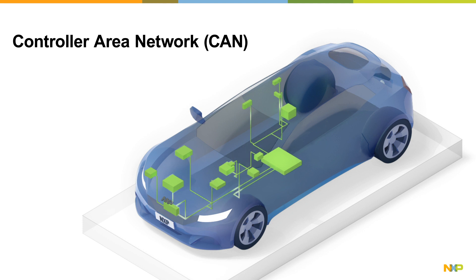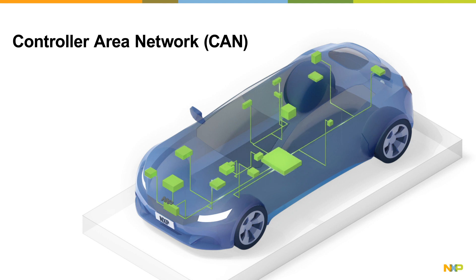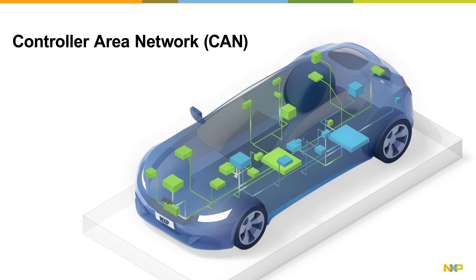For many years, CAN has been the primary communications standard within vehicles. In recent years, however, as the number of automotive electronics has increased, as well as the amount of data transmitted, CAN's bandwidth limitation of 1 Mbit per second has become an impediment. Automotive manufacturers were forced to add multiple CAN networks into vehicles, which added weight and complexity, and decreased performance and fuel efficiency.